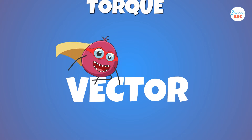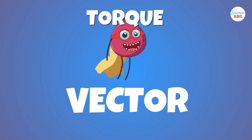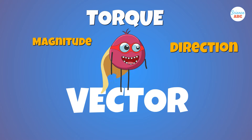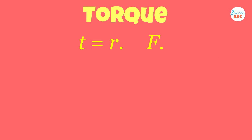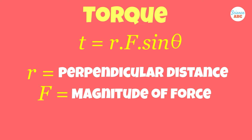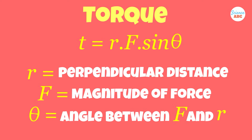Torque is a vector quantity, meaning that it has both magnitude and direction. Mathematically, the magnitude of torque can be represented by this formula: torque equals r dot F dot sine theta, where r represents the perpendicular distance from the axis of rotation, F is the magnitude of force, and theta represents the angle between F and r.